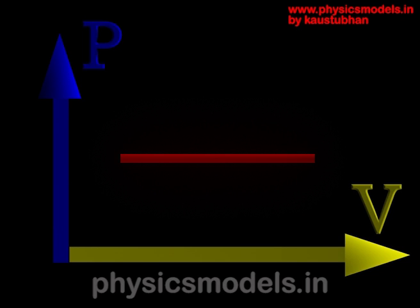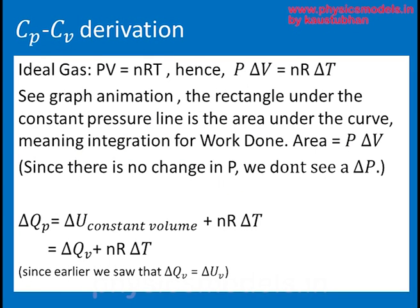So the area under the curve is a rectangle, and length into width is area. The length is delta V and the height is P. That's it. So that's how you get P delta V, and that's why you don't see a delta P.